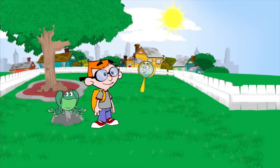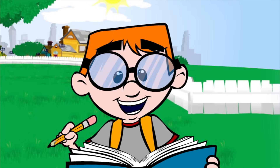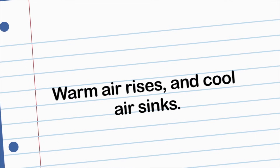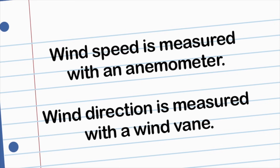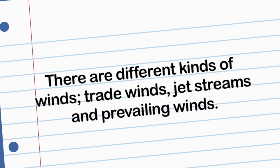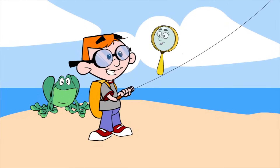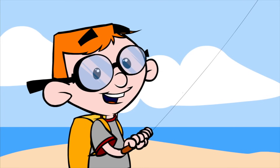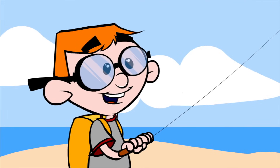Today I learned a lot about wind. Here are the notes I took in my journal: Wind is moving air. Air is made up of gas. Air can push and squeeze — that's called air pressure. Warm air rises and cool air sinks. Wind speed is measured with an anemometer. Wind direction is measured with a wind vane. There are different kinds of winds: trade winds, jet streams, and prevailing winds. There are also sea breezes. The sea breeze is a kind of wind that helps me to fly my kite. Learning about wind was fun. Let's go on another scientific adventure real soon.